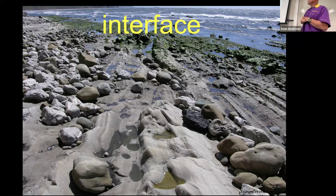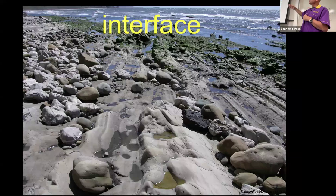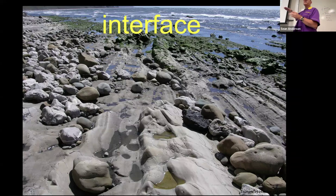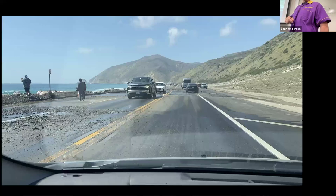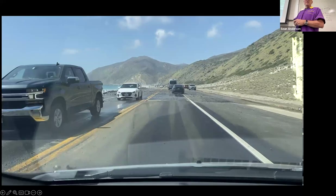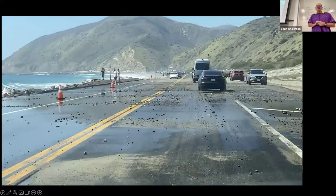We can see with the algae growing on rocks that there's a clear interface — as you go from the left side of the picture to the right, very quickly there's a change in community. This interface is sometimes mellow and sometimes very dynamic. For example, last year driving near Thornhill Broom State Beach, water was overtopping PCH.